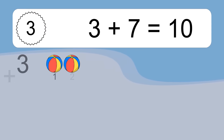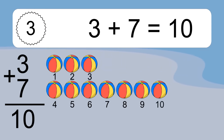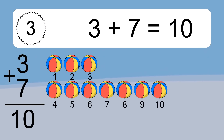3 plus 7 equals what? 3 plus 7 equals 10. Let's count it: 1, 2, 3, 4, 5, 6, 7, 8, 9, 10.